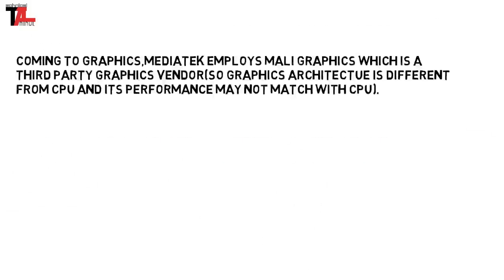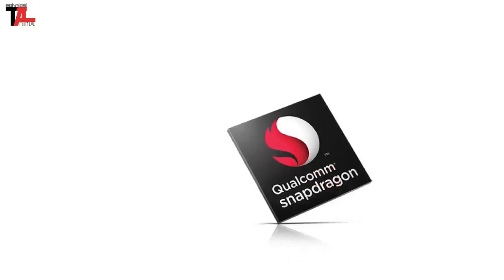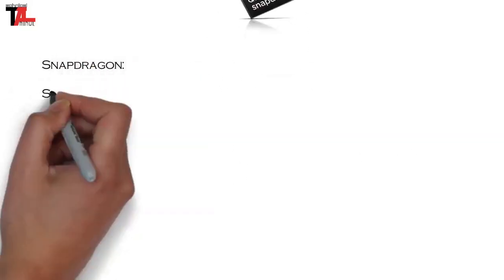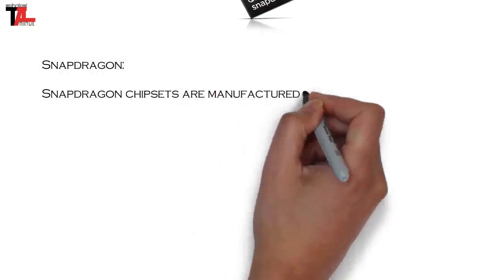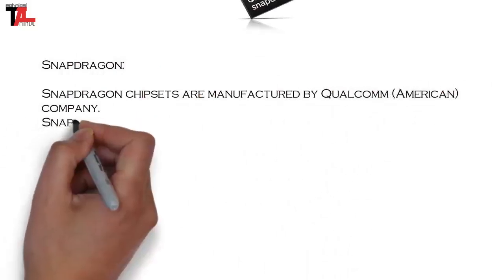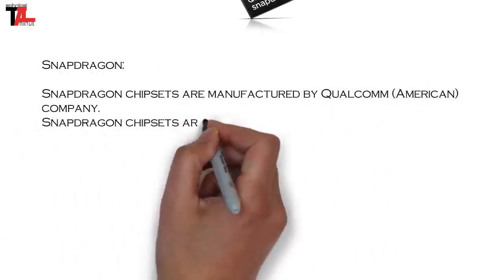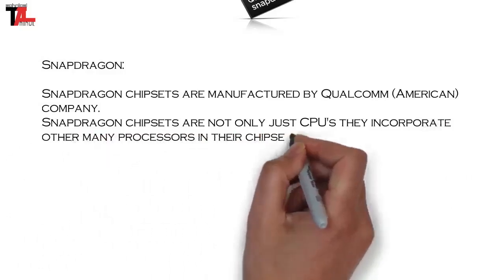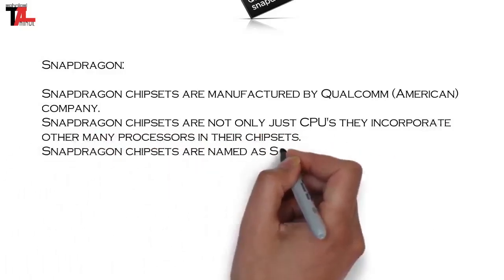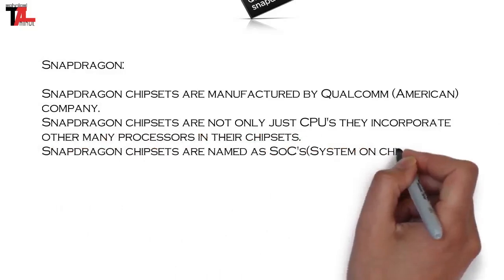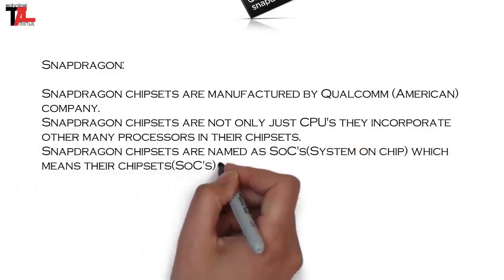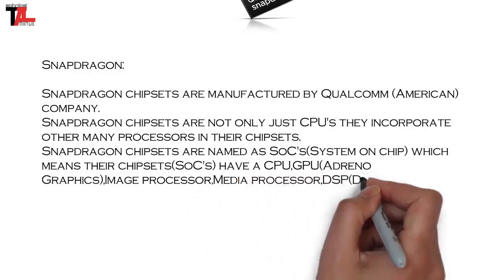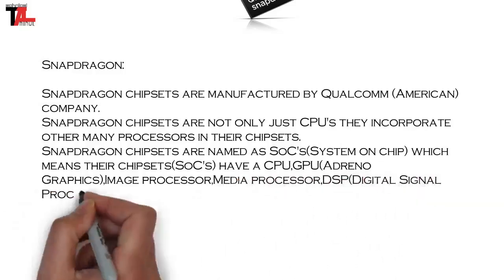Coming to Snapdragon chipsets, they are manufactured by Qualcomm, an American company. Snapdragon chipsets are not just CPUs — they incorporate many other processors in their chipset. This is the main difference between Snapdragon and other chipsets. Snapdragon chipsets are named as SoC, that is System on Chip, which means their chipsets have CPU, GPU, and more integrated together.